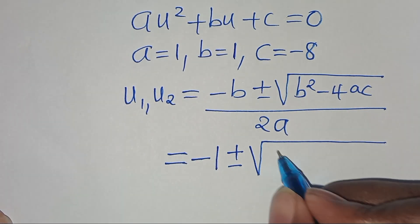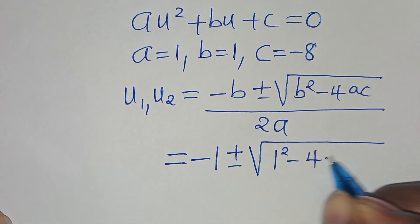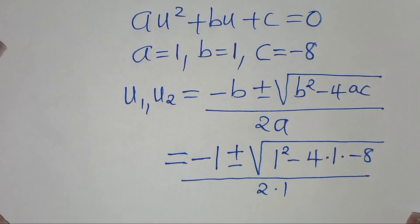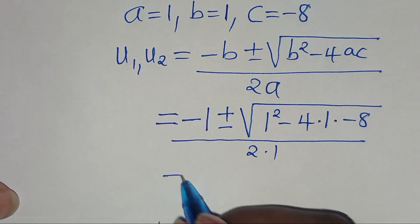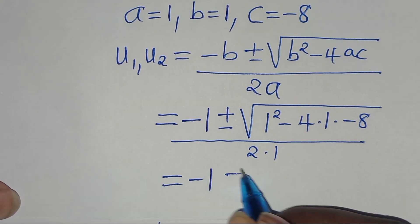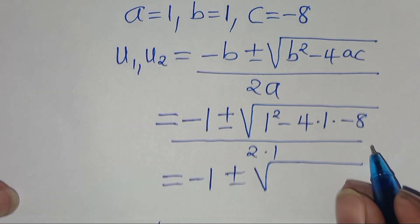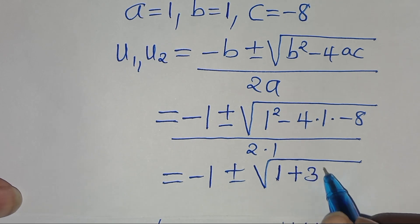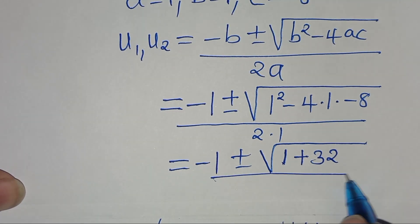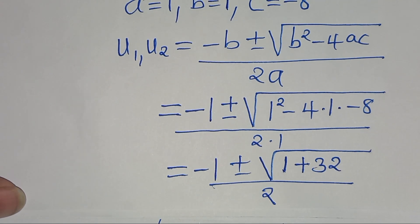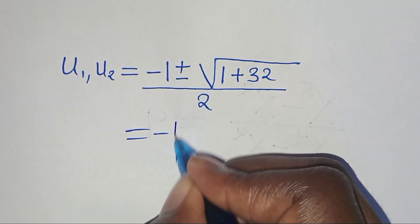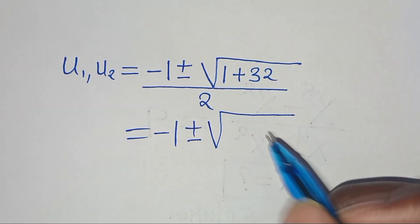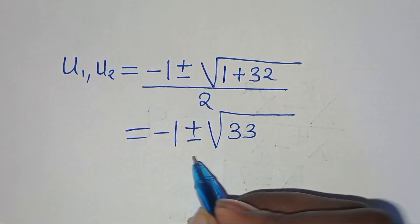Let's substitute the values of a, b, and c, so that we have minus 1, plus or minus the square root of 1 squared minus 4 times a, which is 1, times c, which is minus 8, everything divided by 2 times 1. This implies we have minus 1, plus or minus the square root of 1 squared is 1, minus 4 times minus 8, which is plus 32, then divided by 2. So here we have minus 1 plus or minus the square root of 1 plus 32, which is equal to 33, divided by 2.